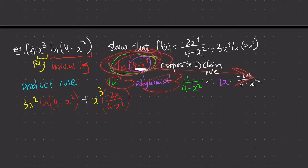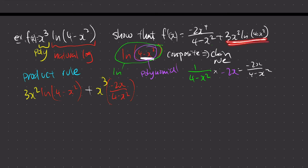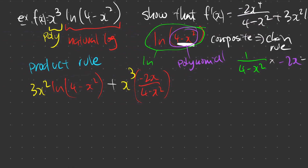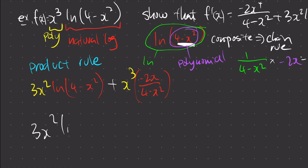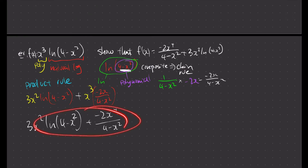Does our answer now look like the target? Almost — the second part looks the same. For the first part, we just need to expand it. I leave the second part as is since it's already correct. Then for x cubed multiplied by negative 2x over (4 minus x squared), that gives us negative 2x to the power 4 over (4 minus x squared), which matches.